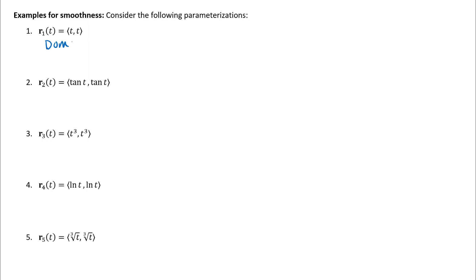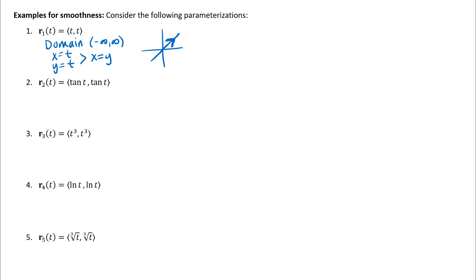For the first one, the domain would be all real numbers — t goes from negative infinity to infinity. If I eliminate the parameter, x = t and y = t, so I get x = y, which is a line. Since this is a parameterized curve we have an orientation; both x and y are increasing functions of t, so the orientation is to the right. Going from negative infinity to infinity will trace that curve exactly once.